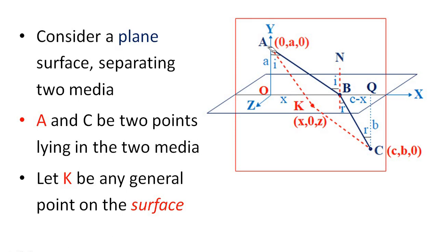Point A has coordinates (0, a, 0), so capital A is on the y-axis and the values of x and z are zero, with y equal to small a. Capital C has coordinates (c, b, 0), so on the x-axis the distance is c, on the y-axis the value is b, and since C is in the xy-plane, z equals zero.